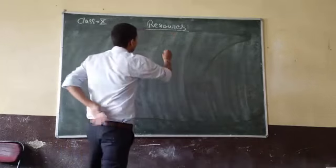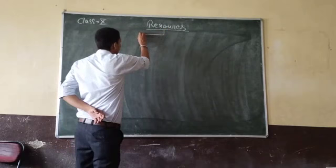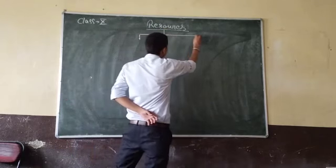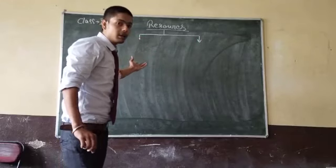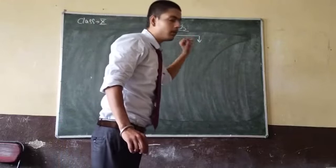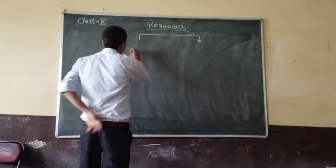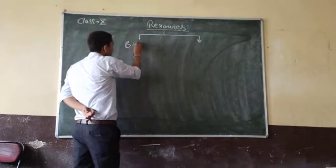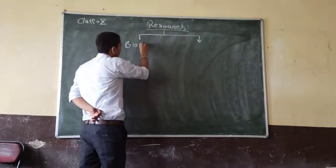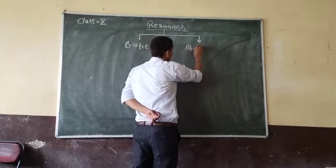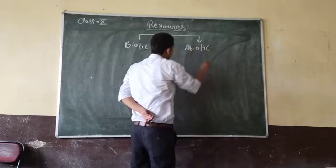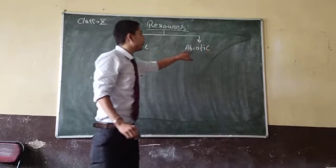We have already discussed resources and we have classified resources. So resources can be classified on the basis of where their origin is from living objects or they are coming from non-living objects. So resources can be of two types on the basis of their origin: biotic and abiotic.